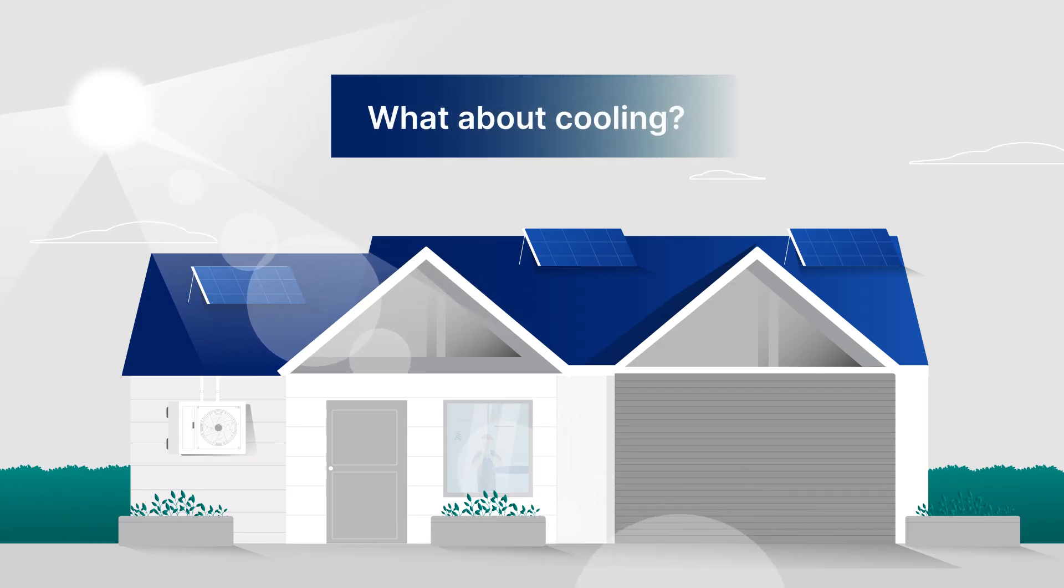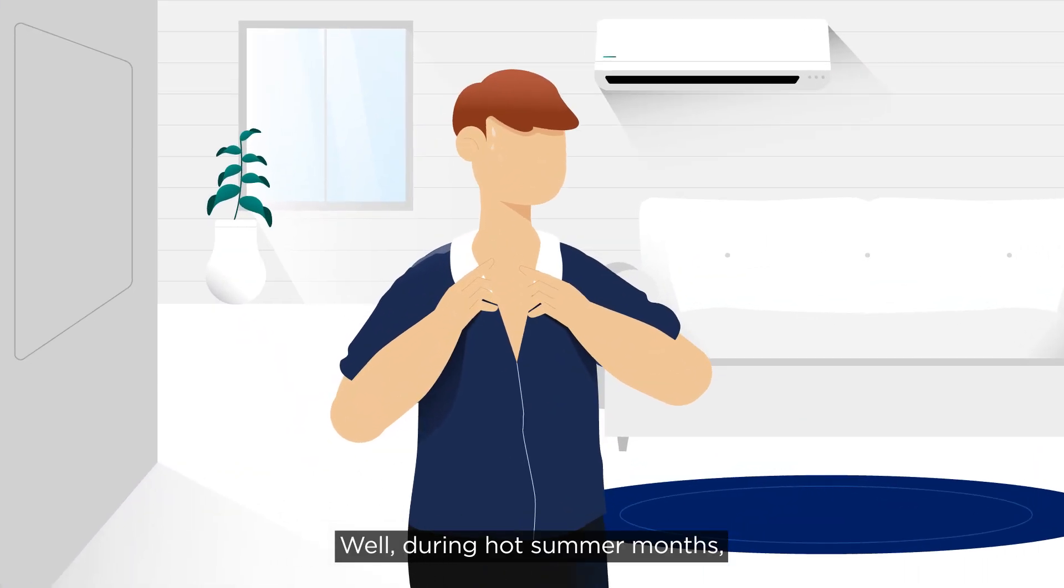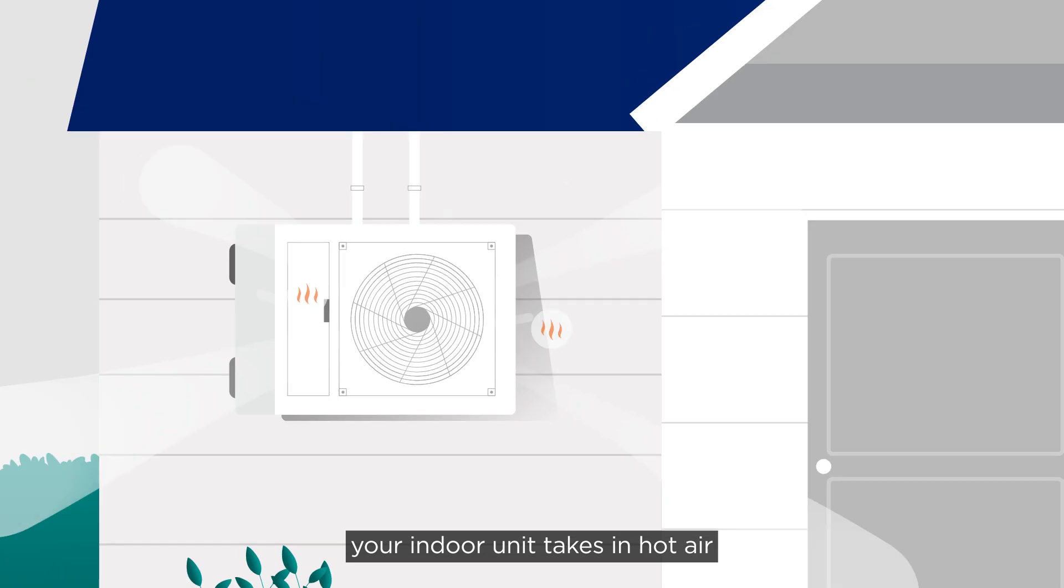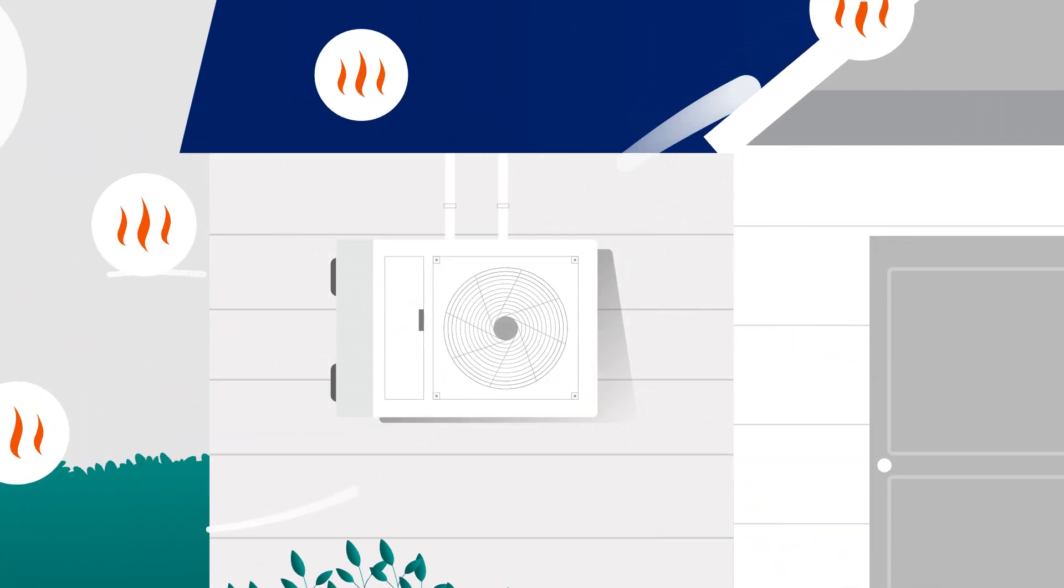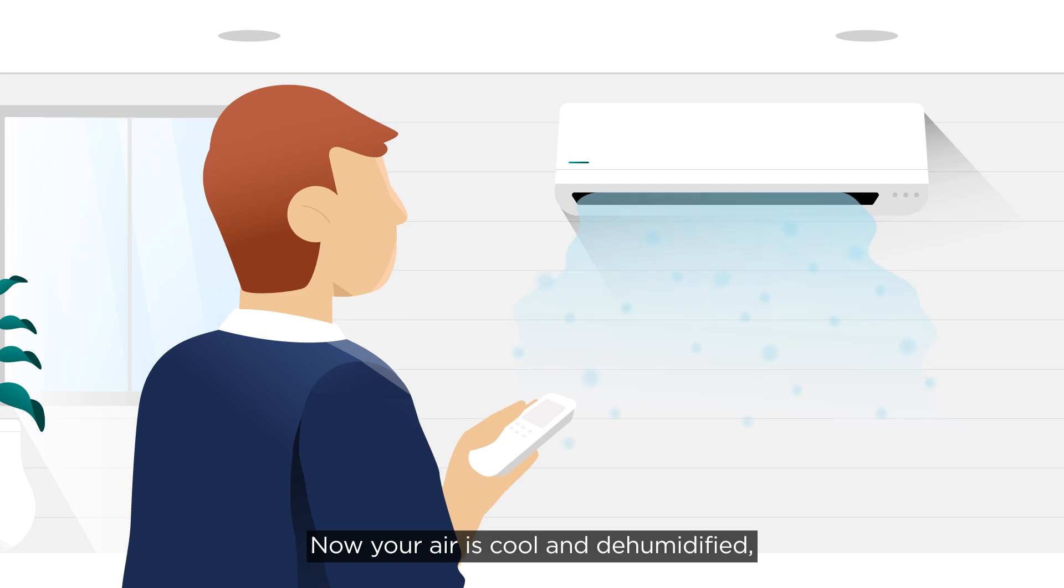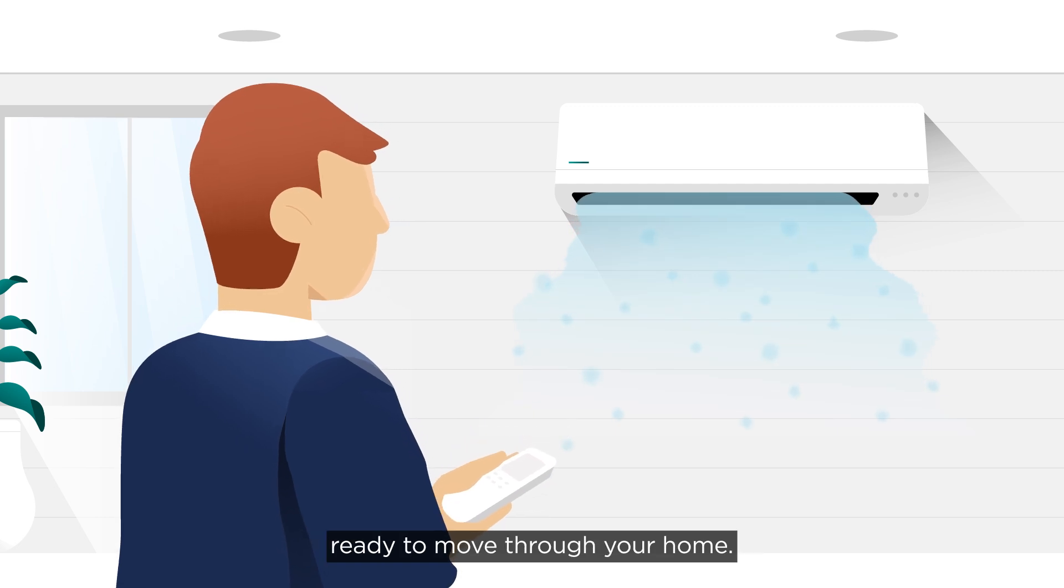What about cooling? Well, during hot summer months, your indoor unit takes in hot air and a refrigerant absorbs heat and sends it outside. Now your air is cool and dehumidified, ready to move through your home.